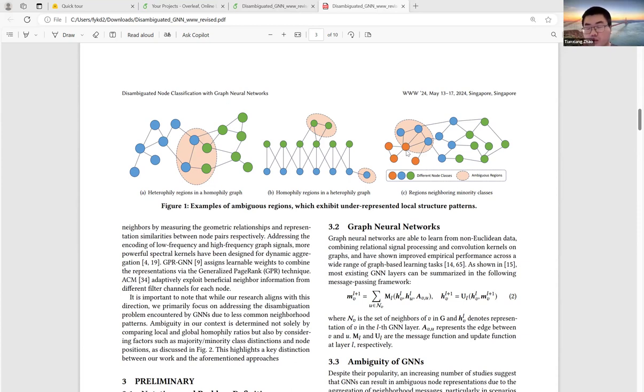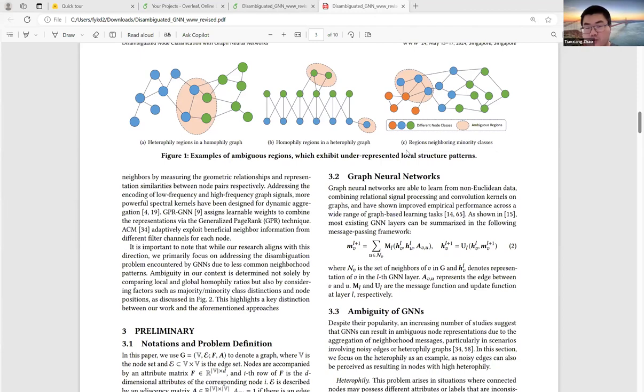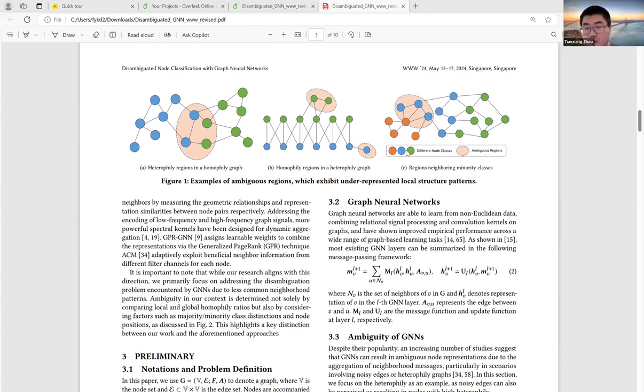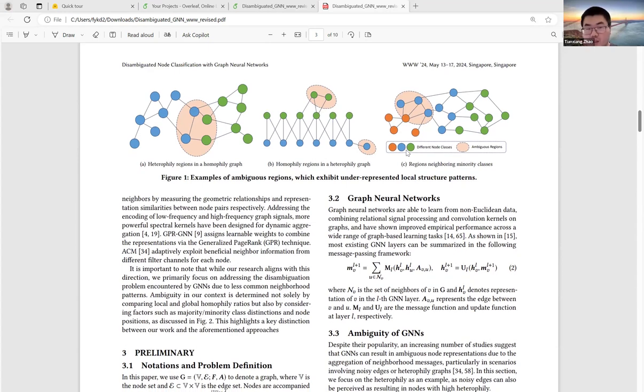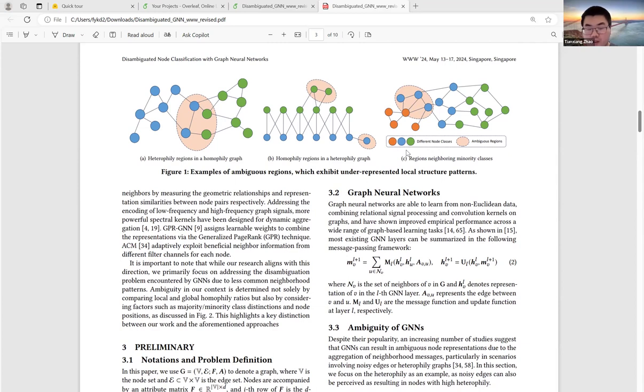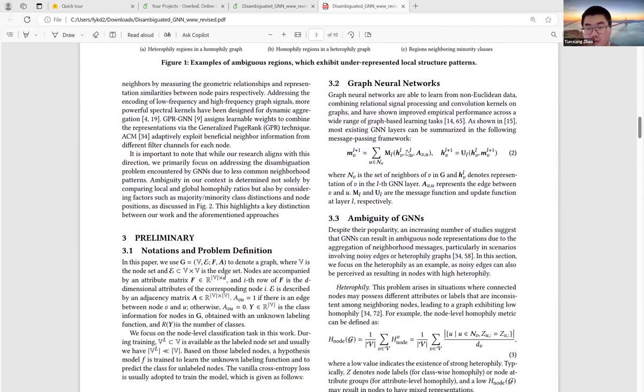In this work, we mainly consider two problems. One, how to detect such ambiguous regions, and two, how to disambiguate them after detection. For the specific identification and specific strategies, please refer to the paper or join our presentation.